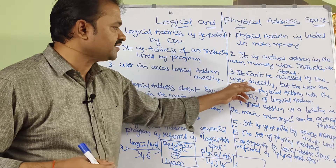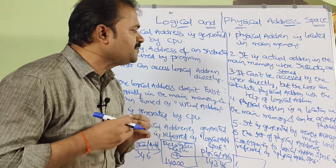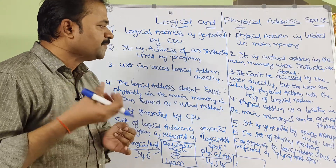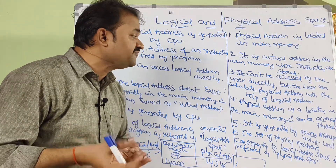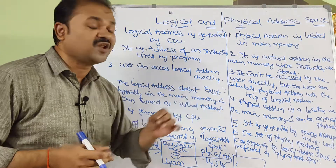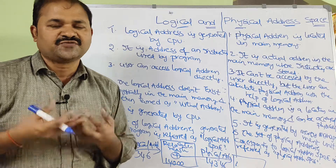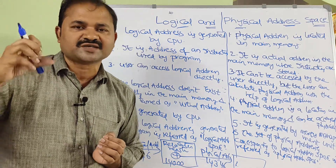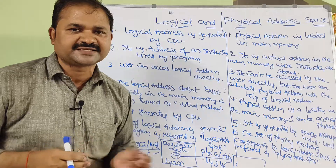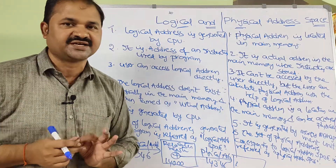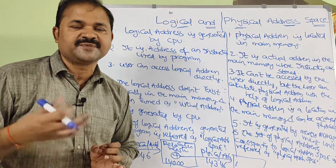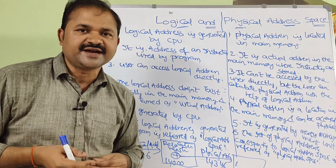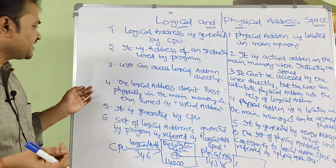So 14,346 is nothing but the physical address in the main memory. Physical address cannot be accessed by the user directly, but the user can calculate the physical address with the help of the logical address. The formula is: physical address equals logical address plus the relocation register. The relocation register is the base register, which contains the starting address of that process.